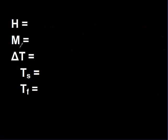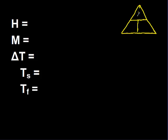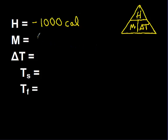Continuing on: we just finished a mass problem. What happens if I need to find a change in temperature — how much does the temperature change? Again, these are just values I'm throwing in, not ones from your homework. Going back to the heat pyramid — heat, mass, change in temperature. In this case, we're going to use negative 1,000 calories because heat was lost, and we had a mass of 200 grams.